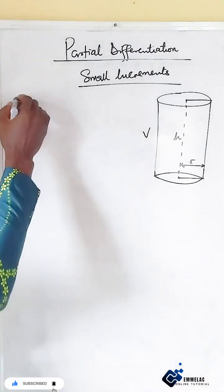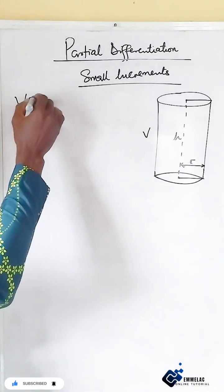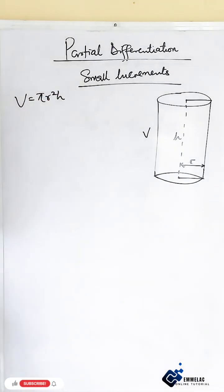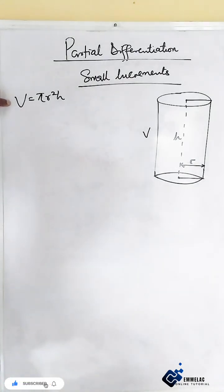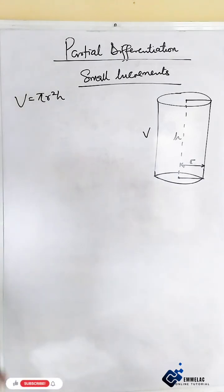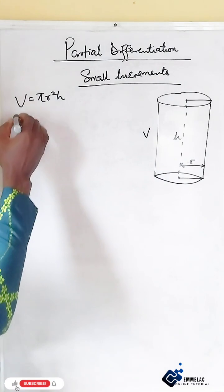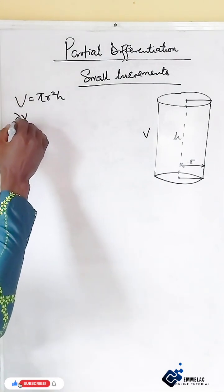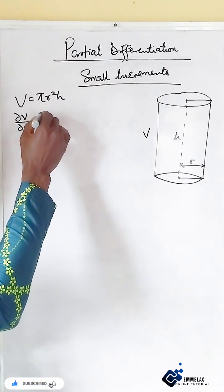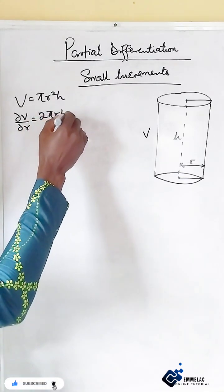Let us recall that the volume of a cylinder is given as V = πr²h. Now first of all, let us find the partial derivative of V with respect to the two variables: r and h — the radius and the height. The partial derivative of V with respect to r will give us 2πrh.